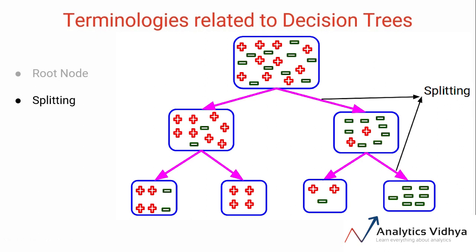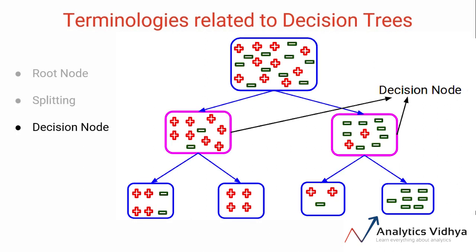Now when a sub-node is further divided into even more sub-nodes, then the initial sub-node we'll call that a decision node. So here these two highlighted nodes are the decision nodes.